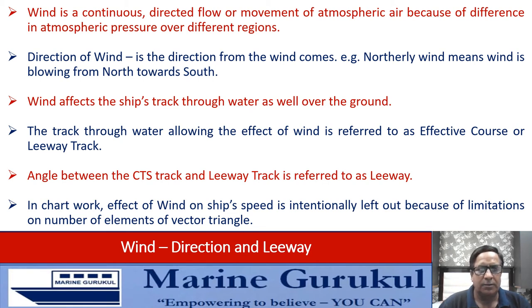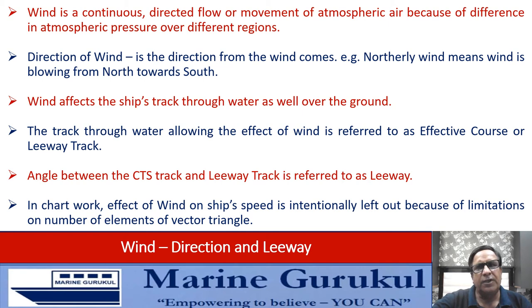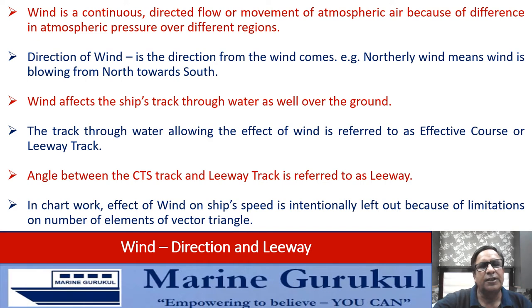In chart work, the effect of wind on ship speed is intentionally left out due to limitations on the number of elements in the vector triangle. In practice, this is seldom a serious concern because wind blowing over the sea surface generates frictional currents — so wind and current often coexist. When current is estimated, the effect of wind will automatically be captured within it. In a hypothetical case of wind only with no current, the omission of wind speed effect is noted but may not be practically significant.